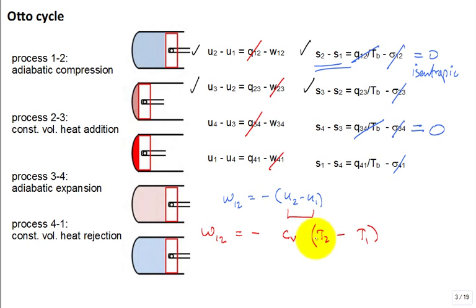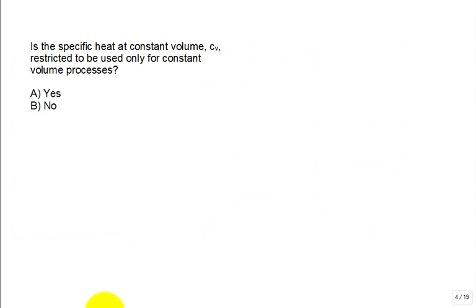So the game is to get the temperatures and then use that to get the works and the heat transfers, and then make some computations about the cycle. I just wrote the equation where we use this property C sub V. The name of it is the specific heat at constant volume. So the question is: is the specific heat at constant volume restricted to be used only for constant volume processes? We'll take your votes now — answer A: yes, answer B: no. This is for an ideal gas.